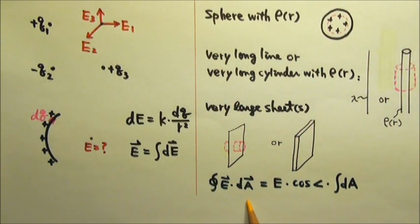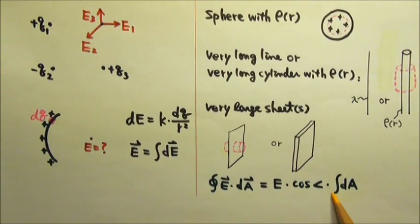So for the part of a Gaussian surface with non-zero flux, we can always take out the constant E, the constant cosine of the angle between E and dA, so we are left with only dA in the integral, which simply gives us the total area.